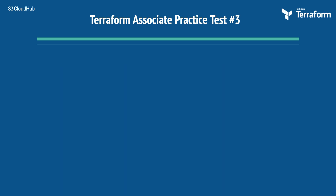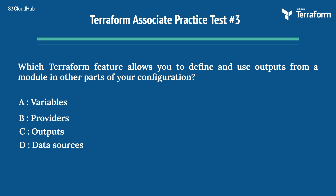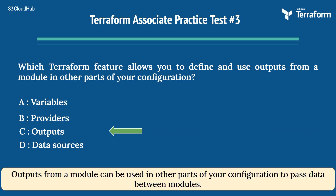The third question: which Terraform feature allows you to define and use outputs from a module in other parts of your configuration? Options are: A) variables, B) providers, C) outputs, D) data sources. The right answer is Option C, outputs. Outputs from a module can be used in other parts of your configuration to pass data between modules.